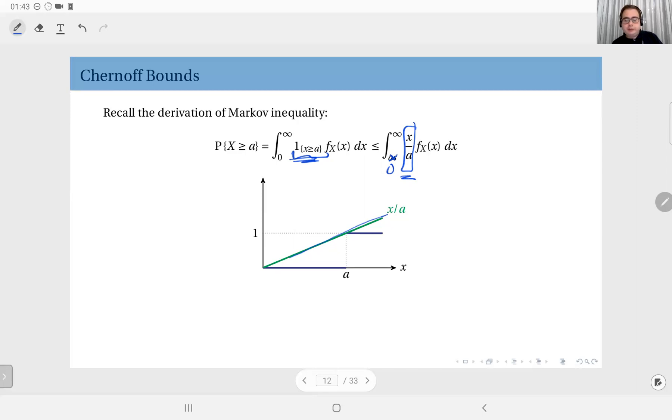The main observation here is that the indicator function that looks at the event X greater than or equal to A, is always less than or equal to the function X divided by A. Therefore, when you replace this X divided by A, 1 over A is a constant, so I can pull it out of the integration. What remains is the integral from 0 to infinity, which is the entire sample space, X times the PDF, which gives me the expected value. Therefore, this is expected value of X divided by A, which is the Markov inequality.